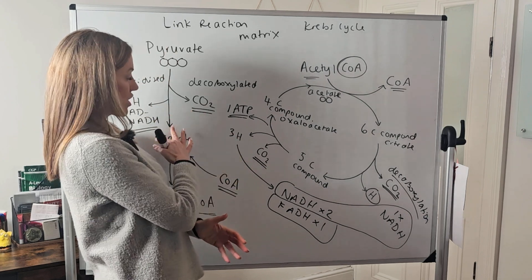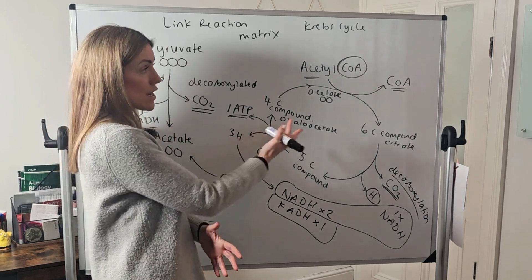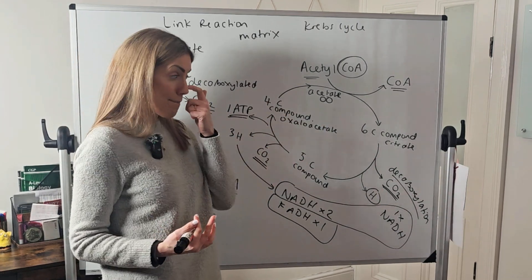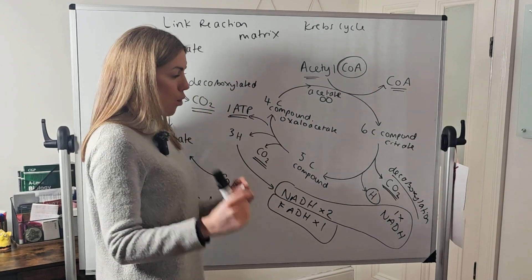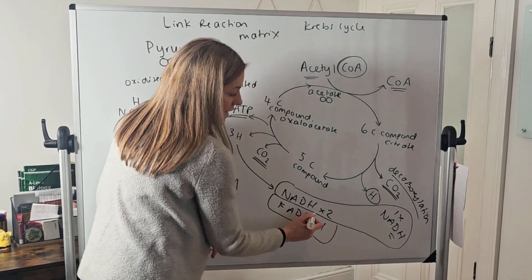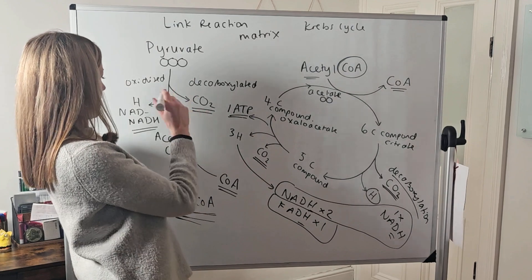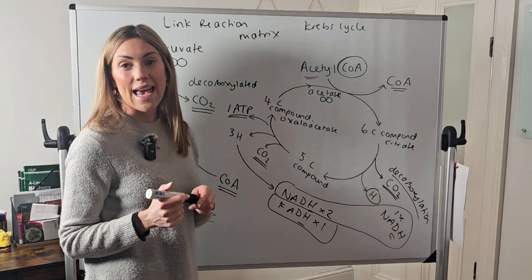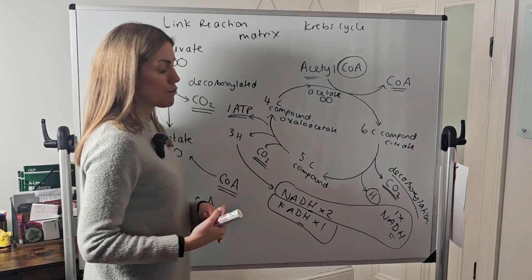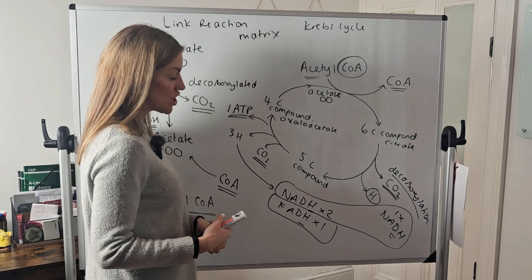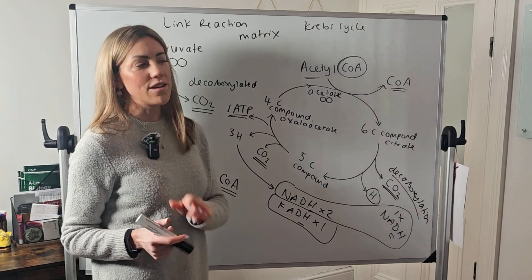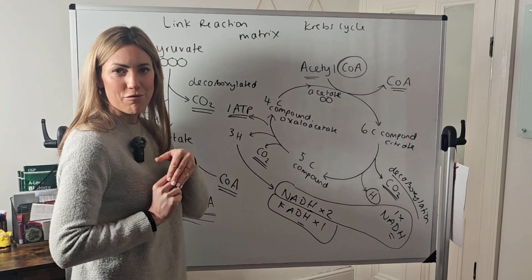The link reaction itself doesn't make any ATP, and the Krebs cycle only makes one per cycle, or two per glucose. But all of these hydrogens carried by our NADHs and FADHs are going to be carried to the cristae for the final stage of aerobic respiration — oxidative phosphorylation — where we're going to use those hydrogens to make loads of ATP.